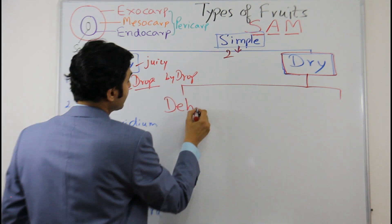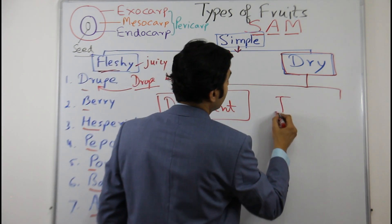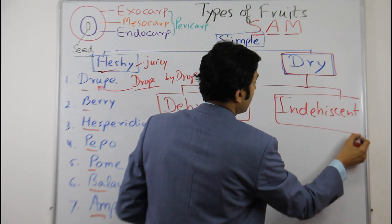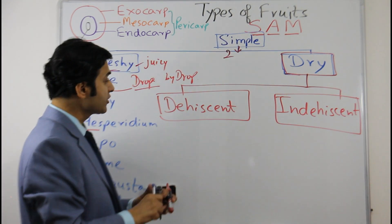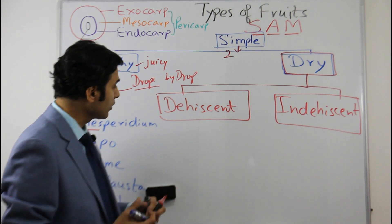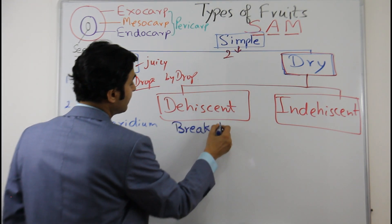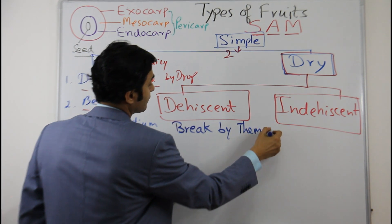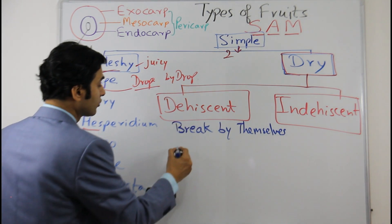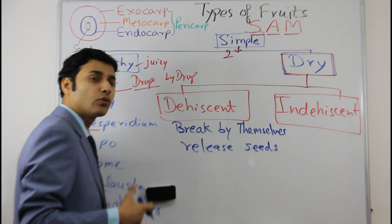The first type is dehiscent and the second type is indehiscent. Dehiscent fruits are those which, when they mature, break by themselves in order to release the seeds. The seeds are present in greater numbers — there are many multiple seeds which are released.